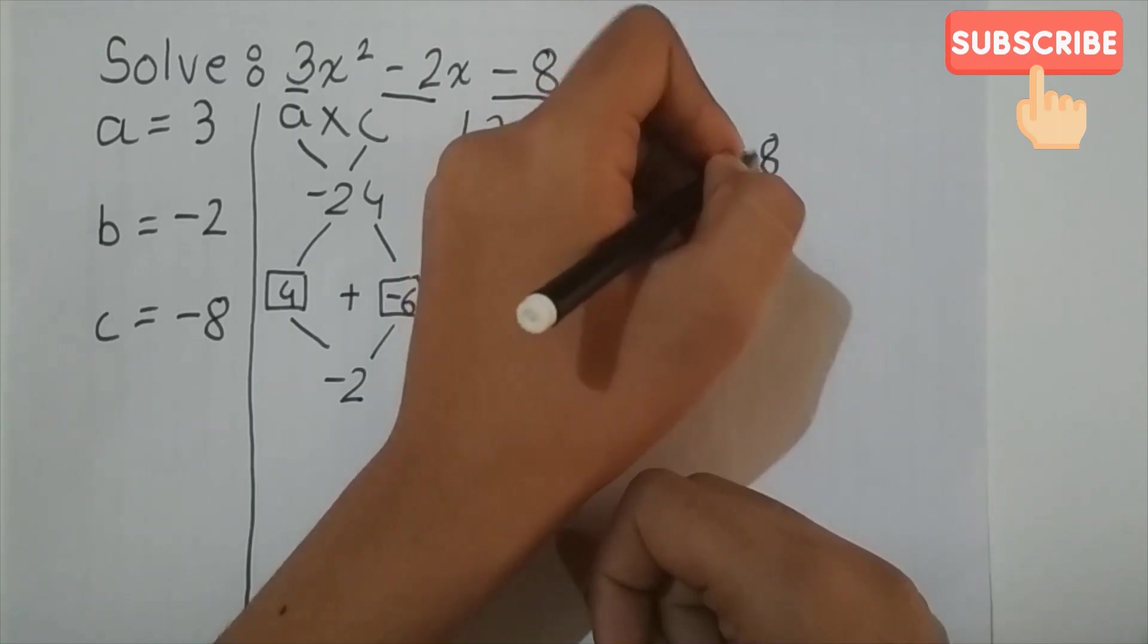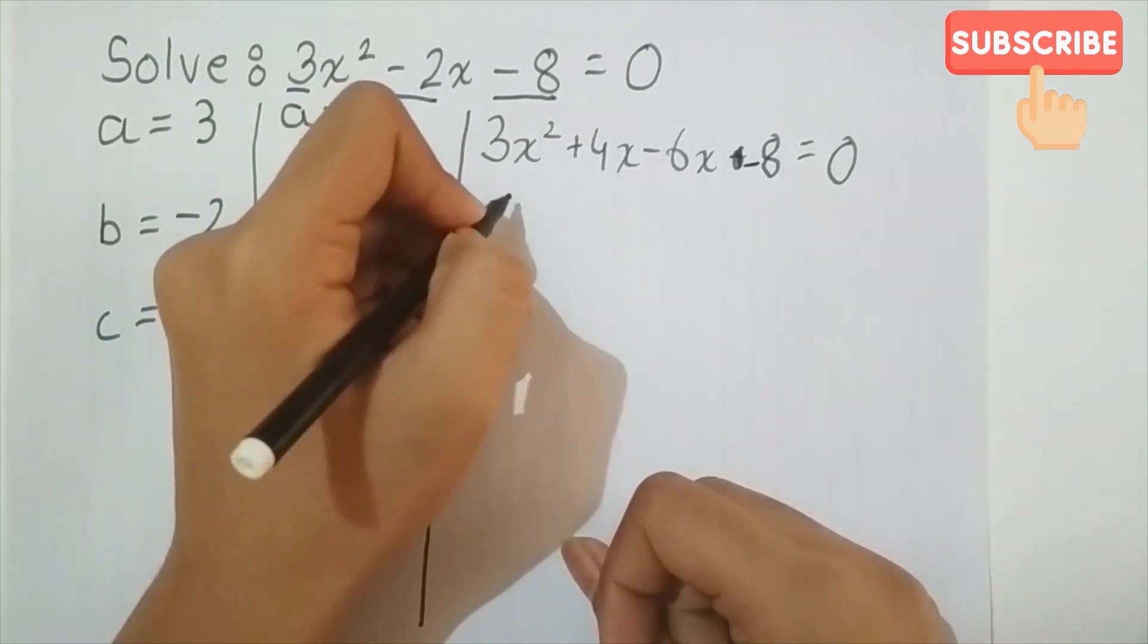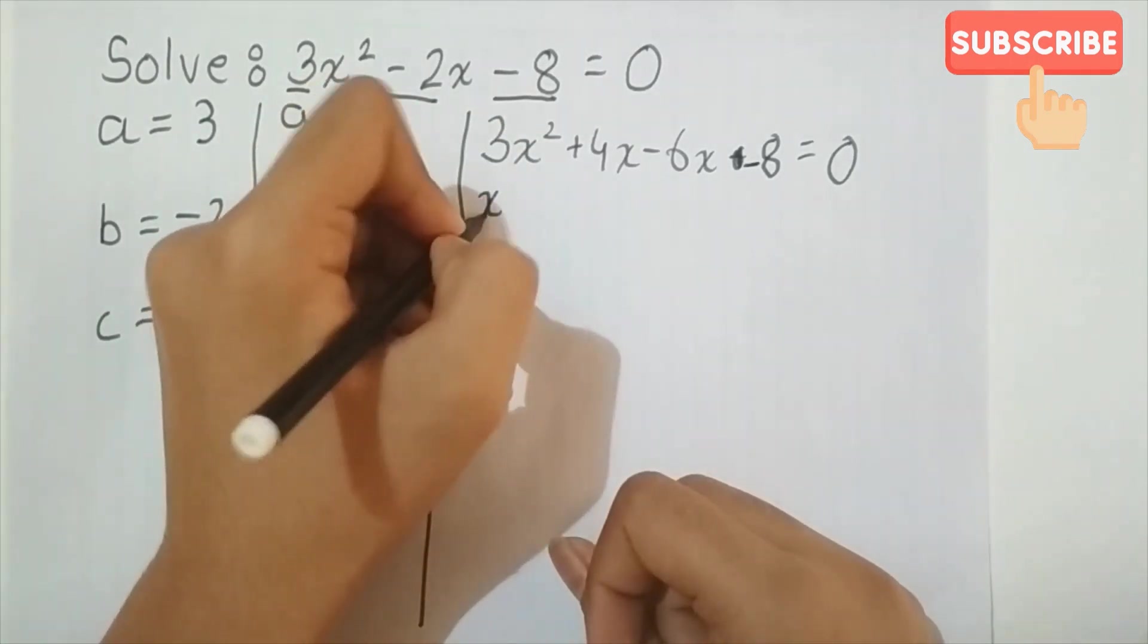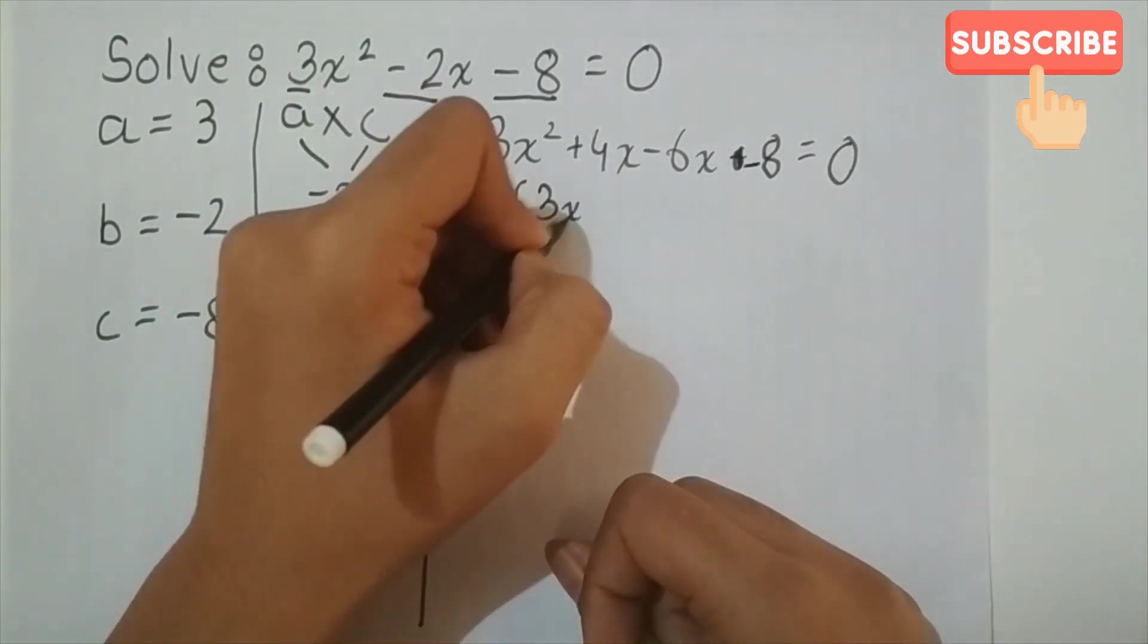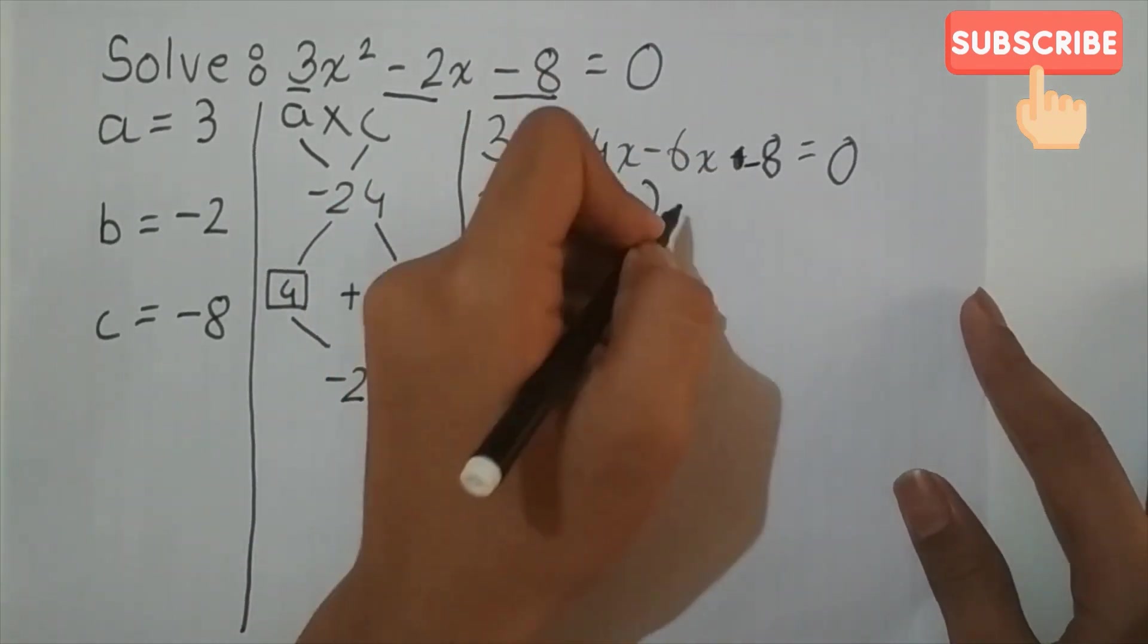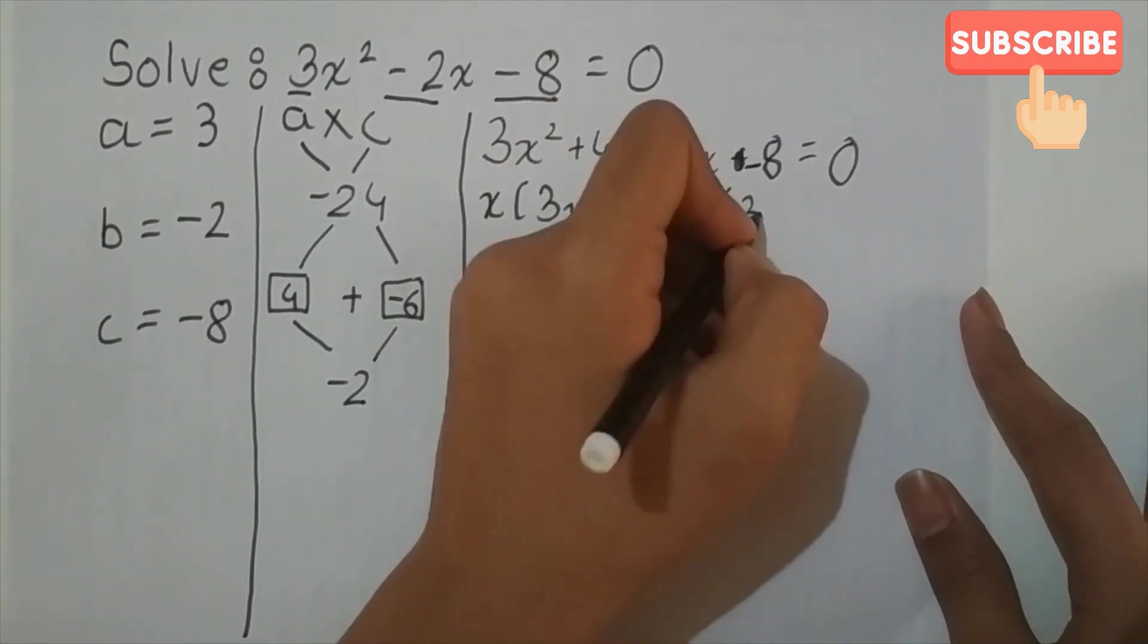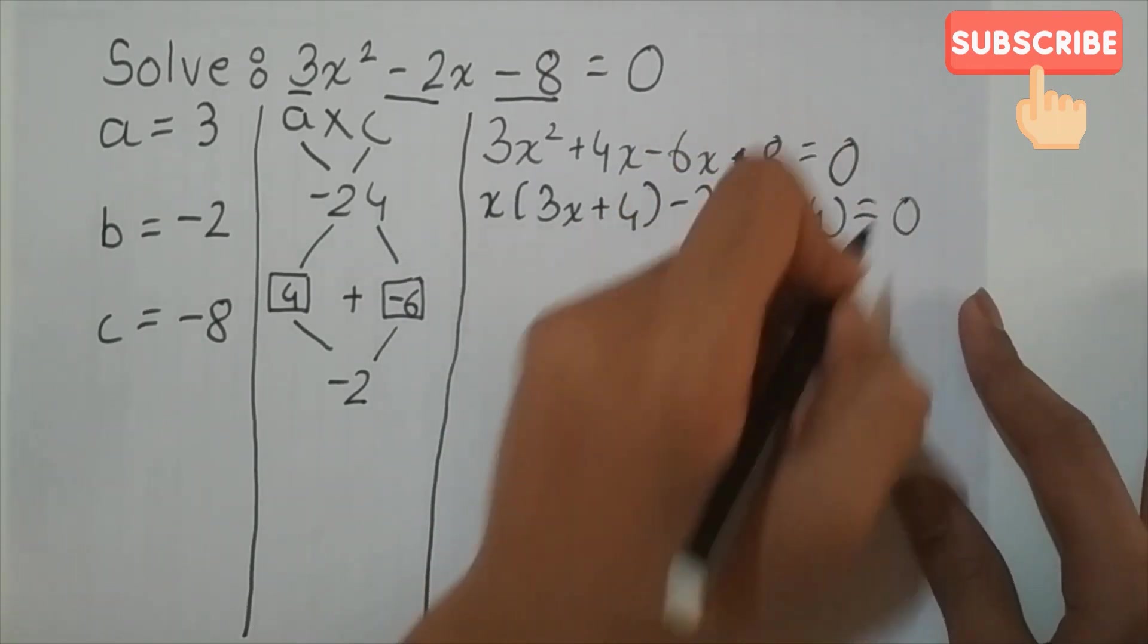So let's write here 3x squared plus 4x minus 6x minus 8 is equal to 0. So taking x common in these two terms, the distributive law, so it is 3x plus 4, and taking minus 2 common in these two terms, 3x plus 4 is equal to 0.